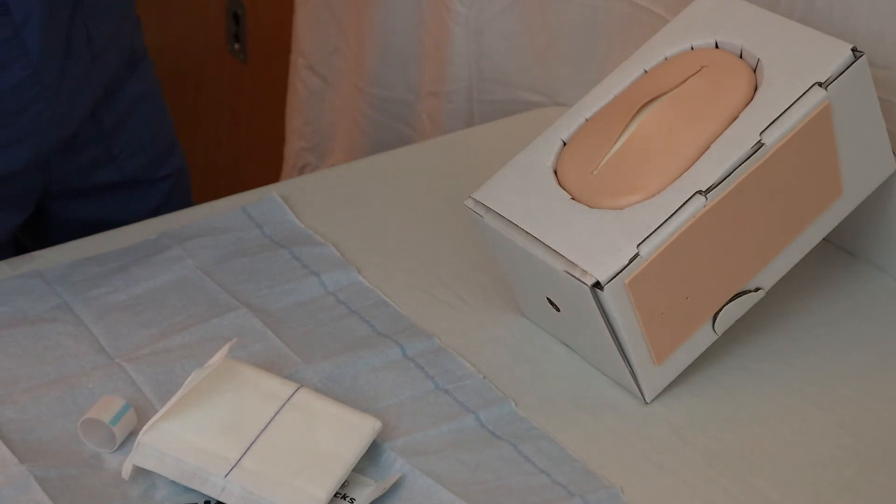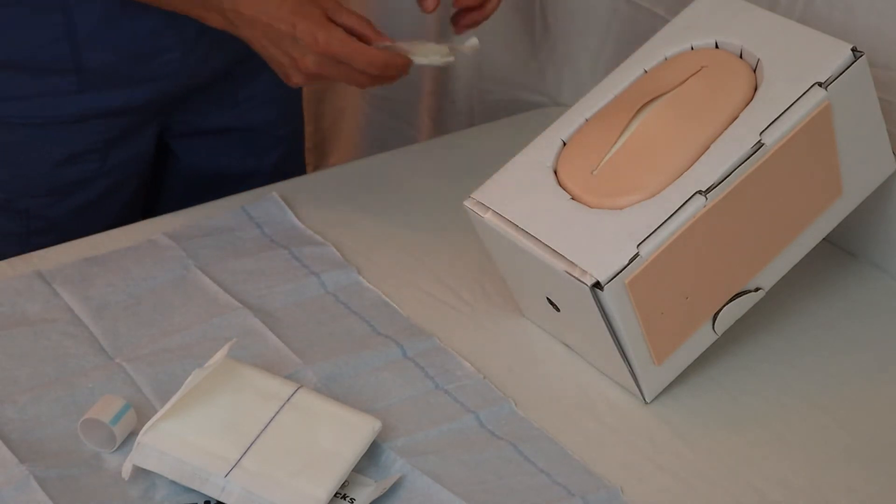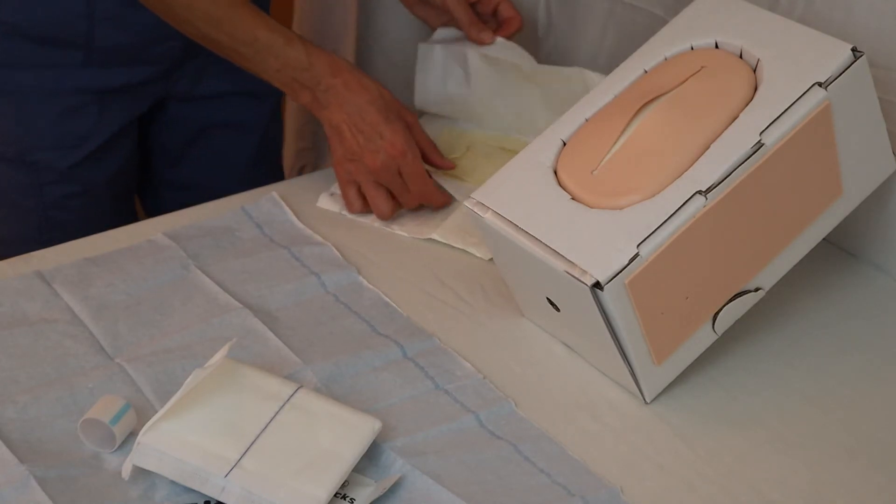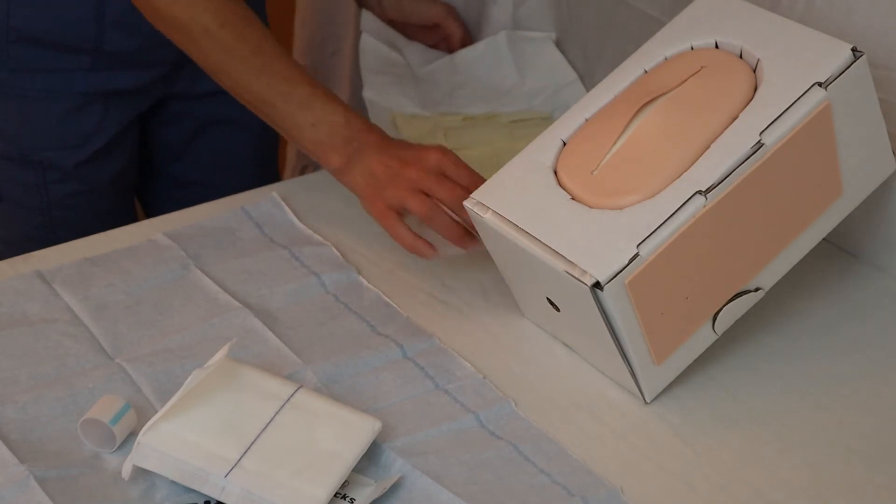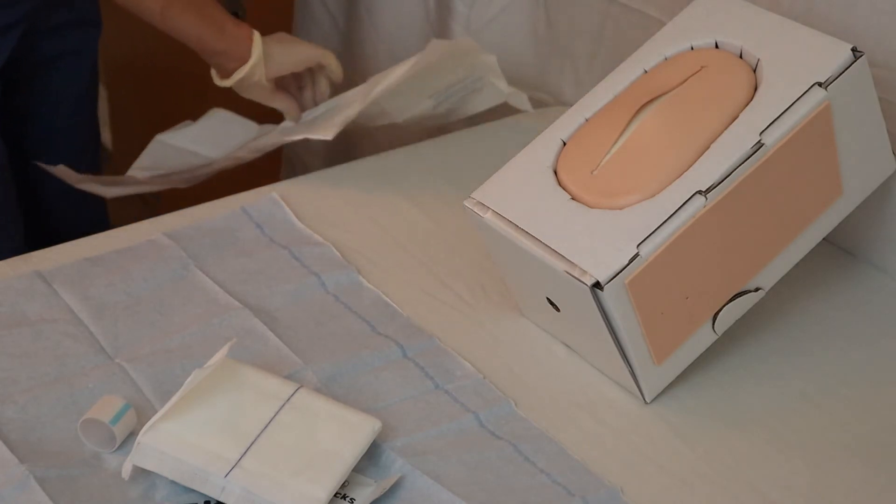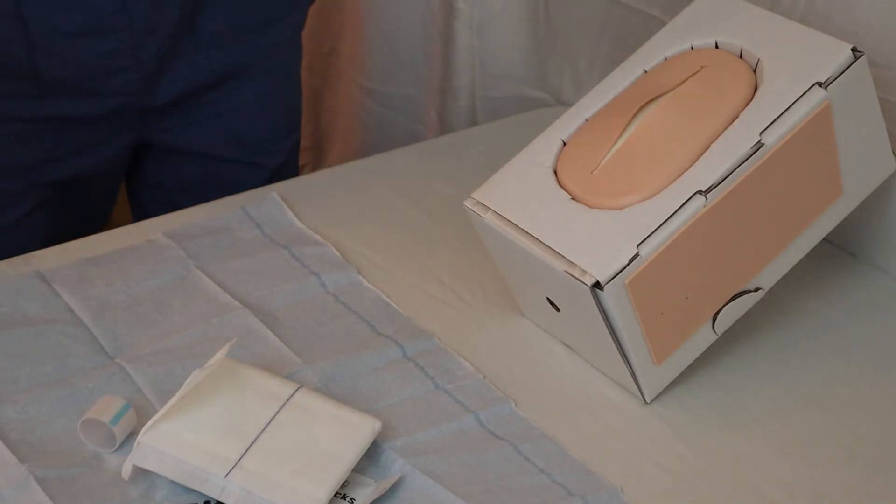Now that I got my sterile field all set up, I'm ready to don my sterile gloves and I'm going to do that away from my sterile field. I don't want to put anything on top, I don't want to reach over it. I have a separate video on how to don sterile gloves properly. And then I can just take the wrapper here and be careful and stay away from the sterile field and throw it in my bin.